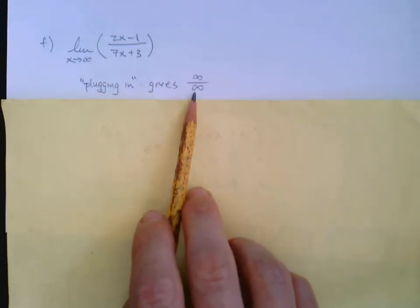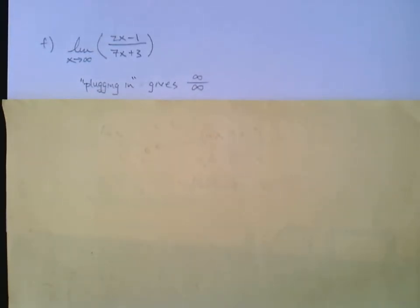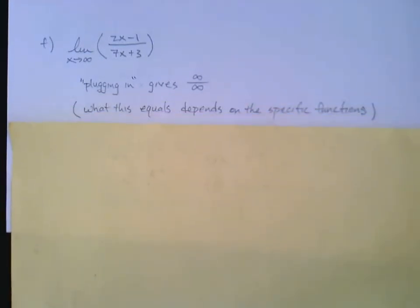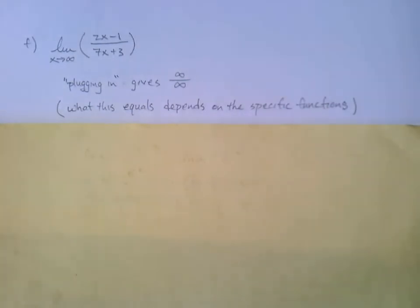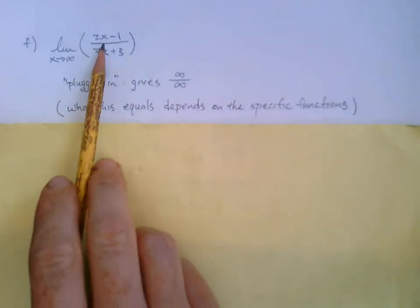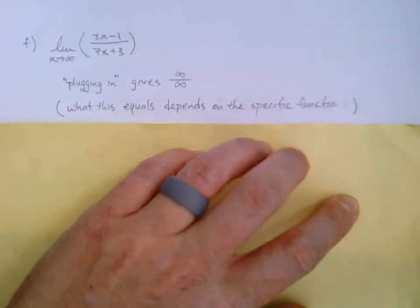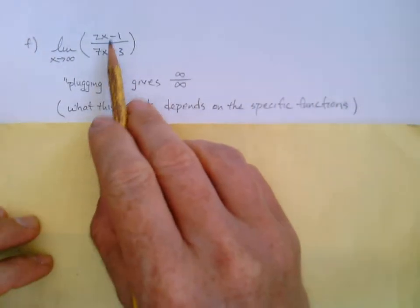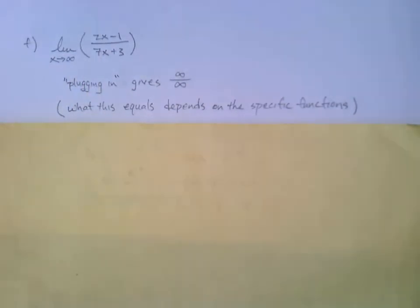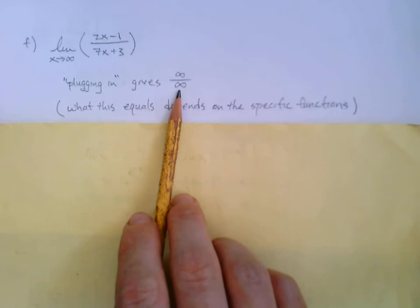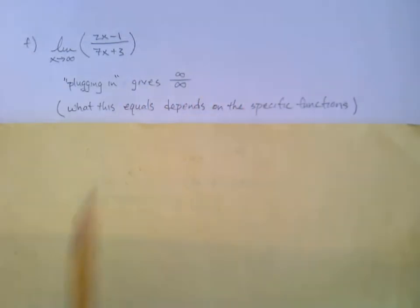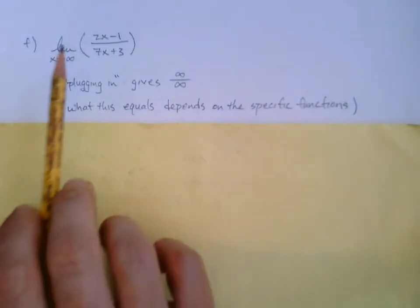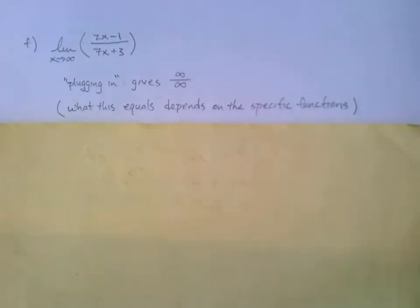It's tempting to say we know the answer is infinity over infinity, but we don't. What that equals depends on the specific numerator and denominator. Sometimes infinity over infinity ends up equaling infinity, sometimes zero, and other times a finite number other than zero. We need to look at the specifics and use algebra to help us.